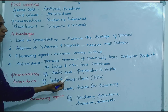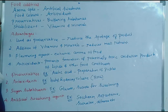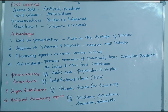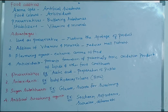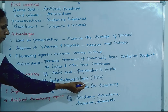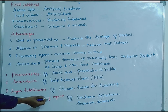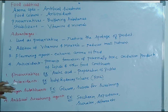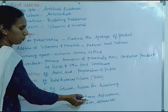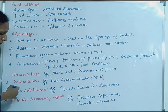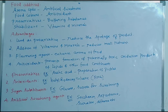Butylated hydroxytoluene, BHT, is another example. Sugar substitutes — sucrose — are used for sweetening. These are called artificial sweetening agents: saccharin, aspartame, sucralose. These are examples of artificial sweetening agents used as food additives.